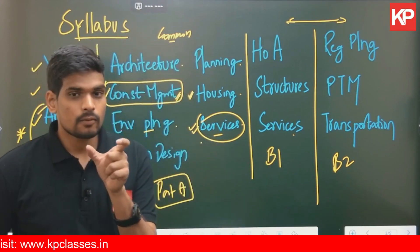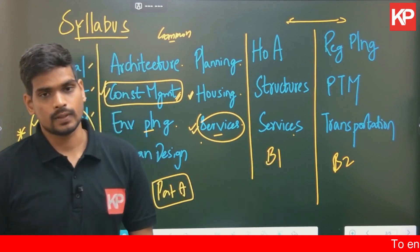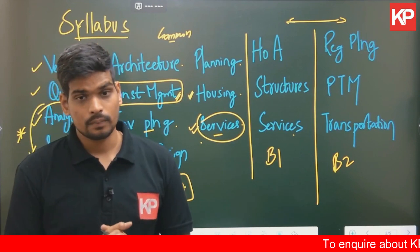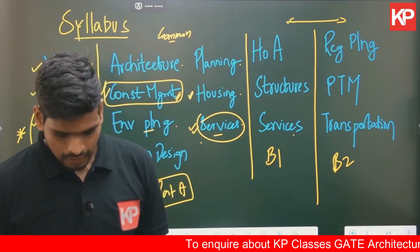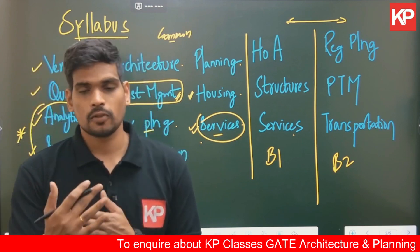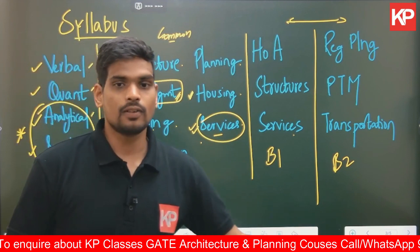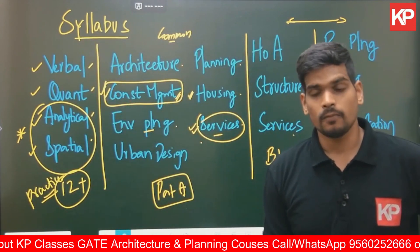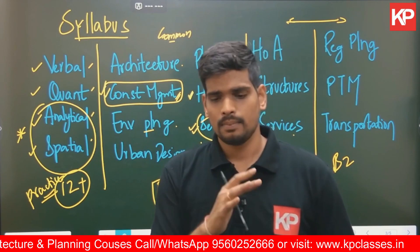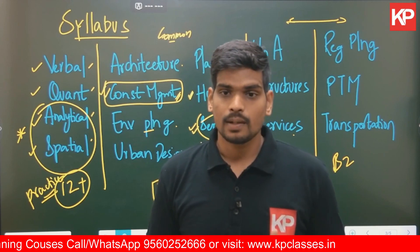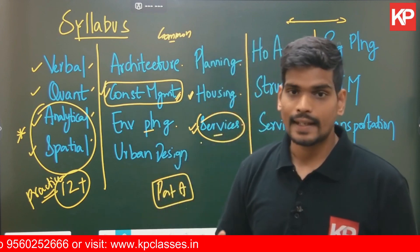Some subjects appear in multiple parts of the syllabus. For example, water supply is mentioned both in the common part under services and in the architecture part under services. It is important to understand which subject falls under which portion. At KP Gate Classes, we recommend a holistic approach — covering everything as much as possible. For instance, in GATE 2022 there was a two-mark question on air conditioning asked in the common part, even though air conditioning is mentioned in the architecture part.